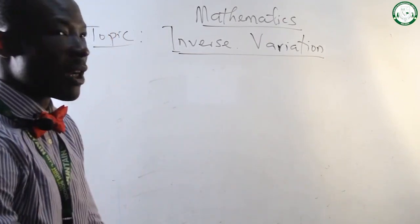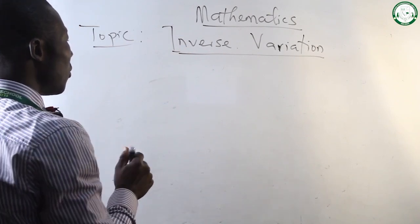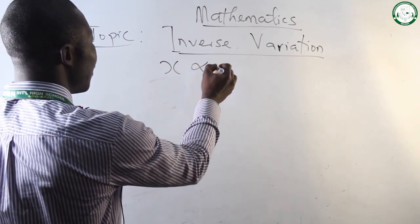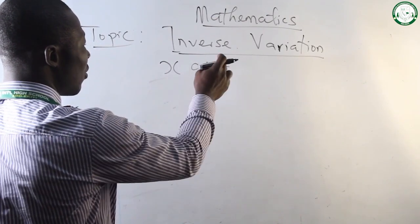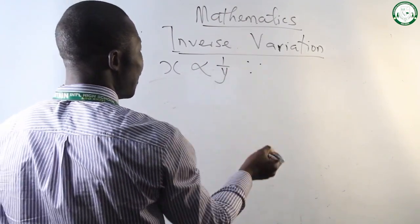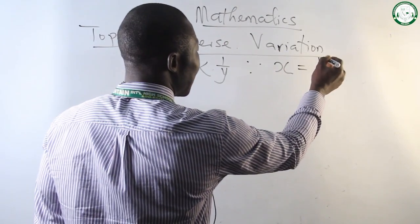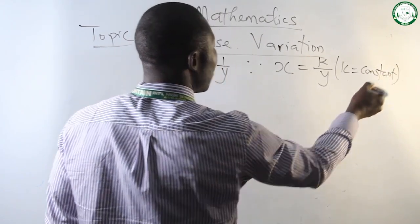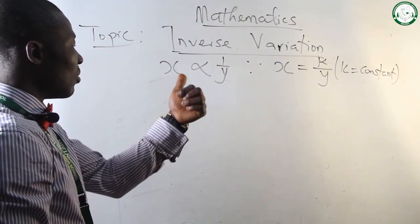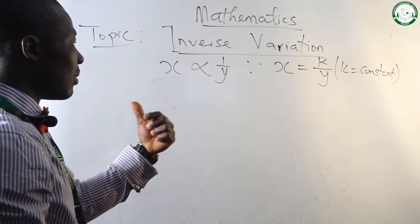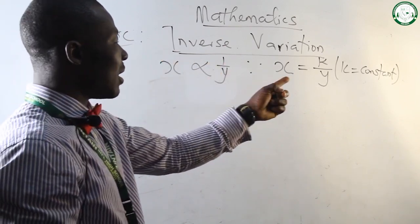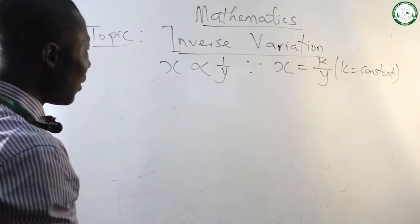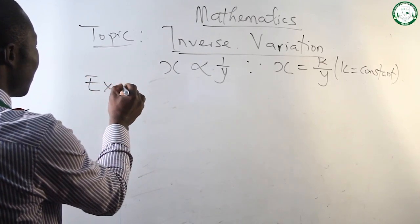When talking about inverse, like the knowledge we know about it, let's say x varies inversely to y. When we are talking about varies inversely, it means 1 over. Therefore, it makes x equals to k over y, where k equals constant. We introduce k into the variation sign. So x equals to k over y, where k is constant — k is the factor affecting the situation at that time.